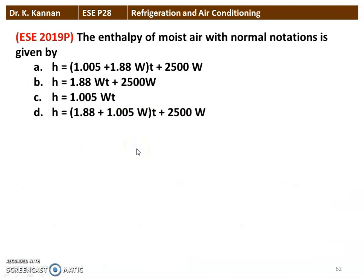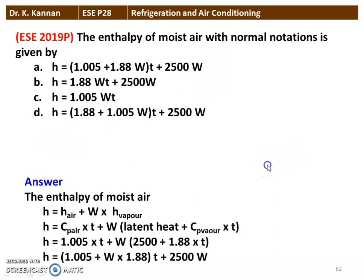The next question from the 2019 question paper: The enthalpy of moist air with normal notations is given by which equation? Four options are given. The correct equation: enthalpy of moist air H equals enthalpy of dry air plus specific humidity multiplied by enthalpy of the vapor.